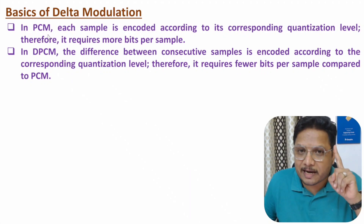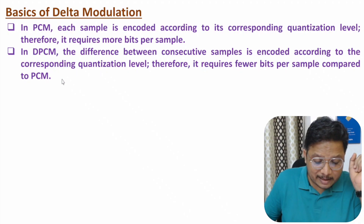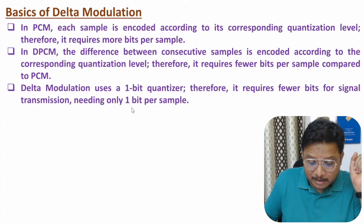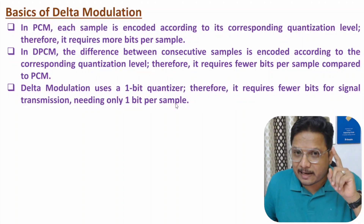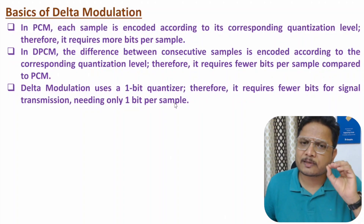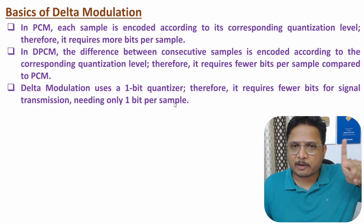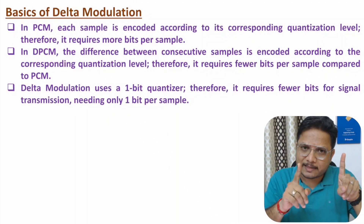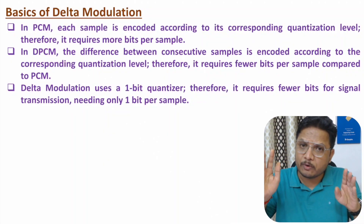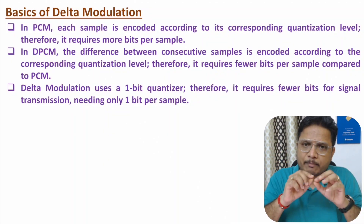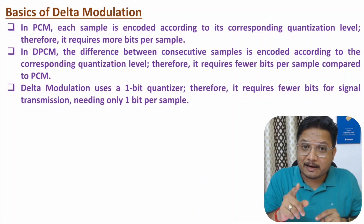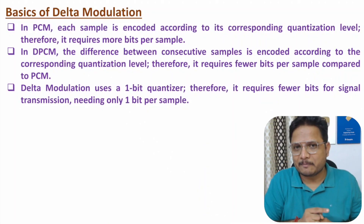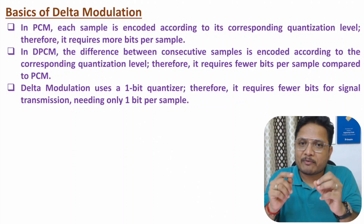But if you talk about delta modulation, then in delta modulation, we just need one bit per sample. So in delta modulation, we follow the same process — first sampling, then quantization, and then encoding — but here, per sample, you just need one bit. Let me explain that by waveforms first.